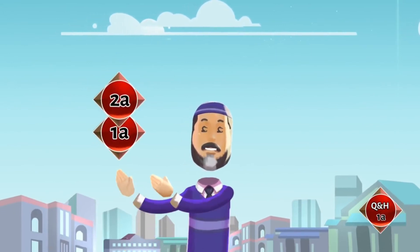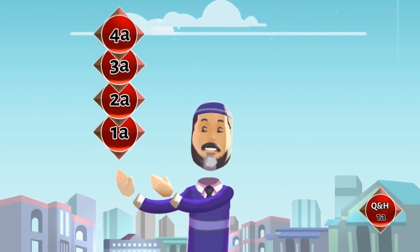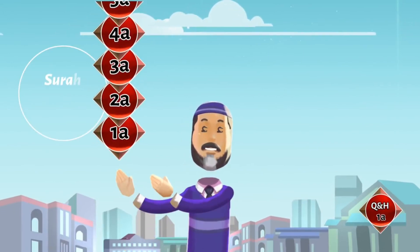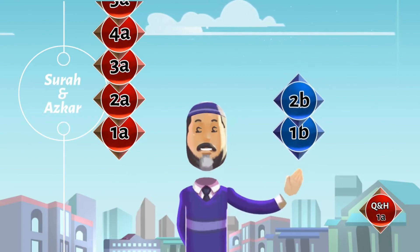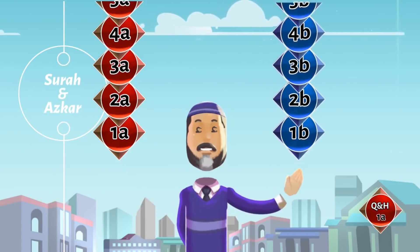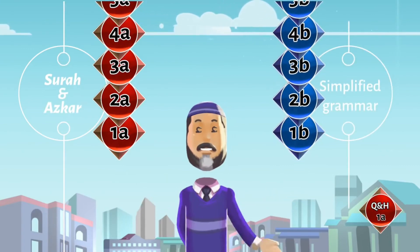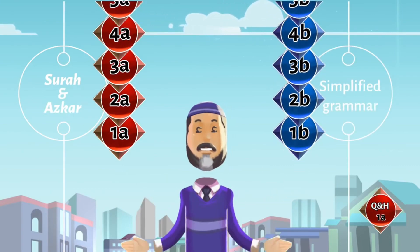Every lesson will have 2 parts: 1A, 2A, 3A, etc. will contain surahs and adhkaar. 1B, 2B, 3B will contain simplified Arabic grammar using TPI and spoken Arabic dialogues. So watch 1B to know more.